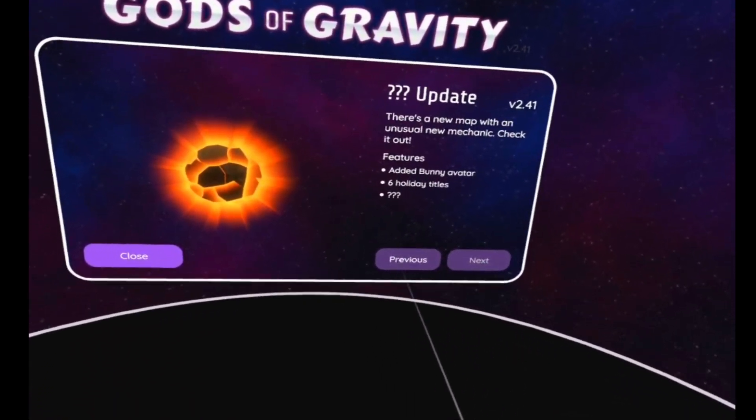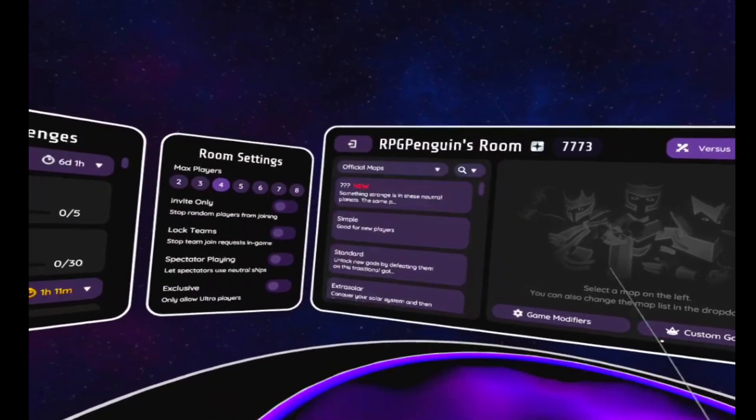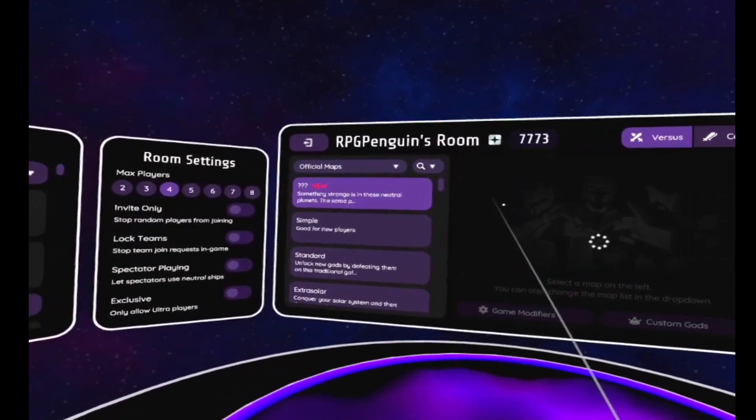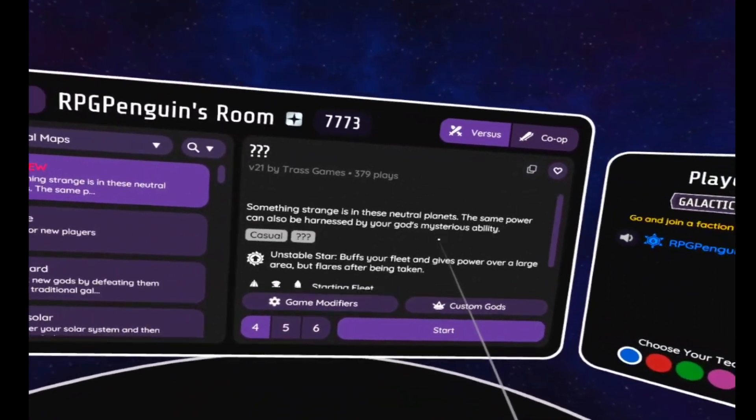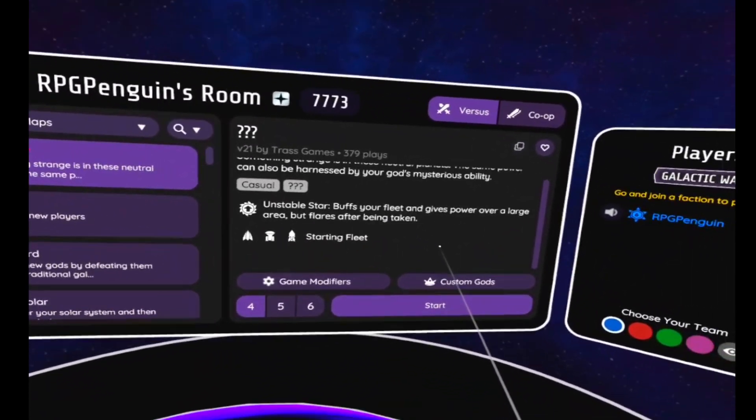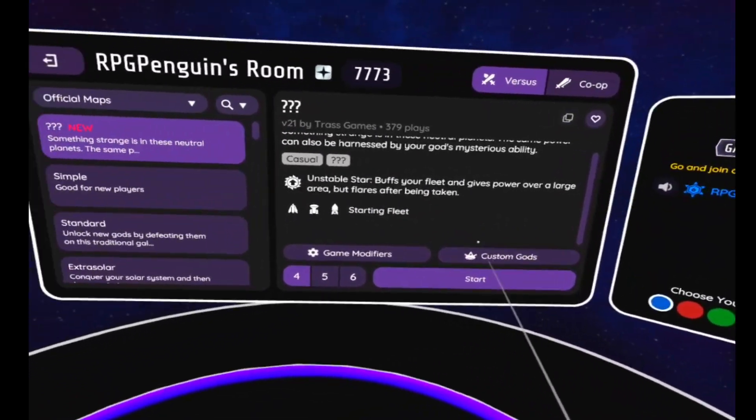Added bunny avatar, six holiday titles, and huh? So we're going to be trying out the huh update today. Let's see. Something strange is in the neutral planets. The same power can also be harnessed by your god's mysterious ability.